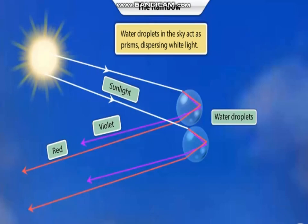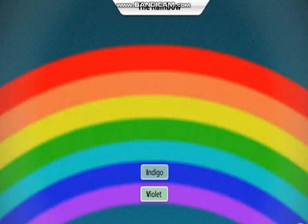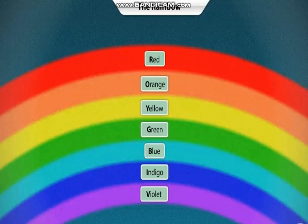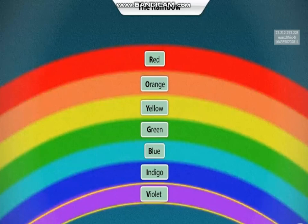The acronym VIBGYOR is used to remember the sequence of the colors in a white beam of light. From the spectrum, you can see that red color bends the least and violet color bends the most.